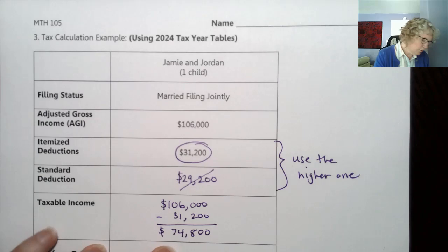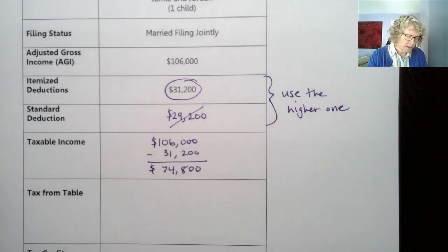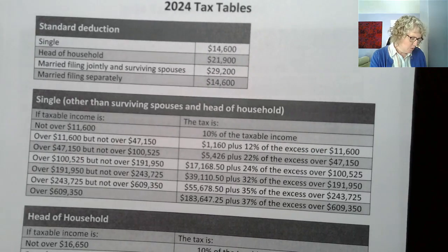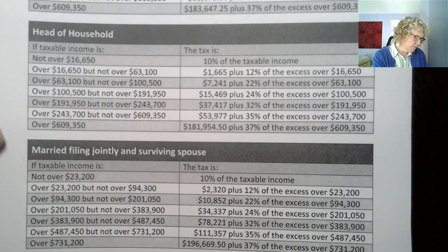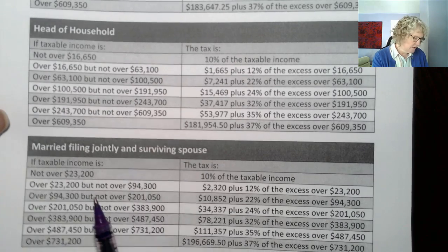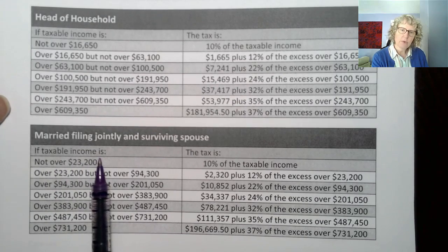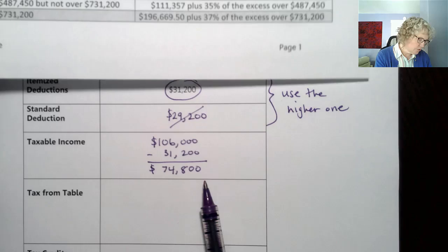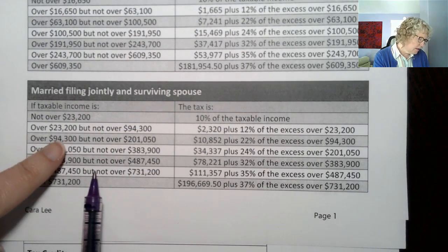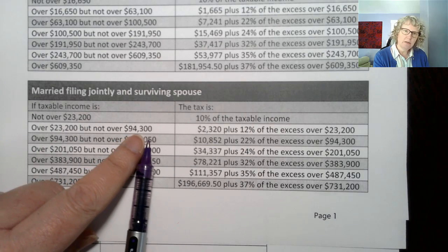So $74,800 is their taxable income — the amount they will pay tax on. Tax from the table is calculated, as it sounds, from the table. Since they are married filing jointly, we use the married filing jointly table. These tables are all based on taxable income. We find which row $74,800 falls into — it is over $23,200 but not over $94,300.